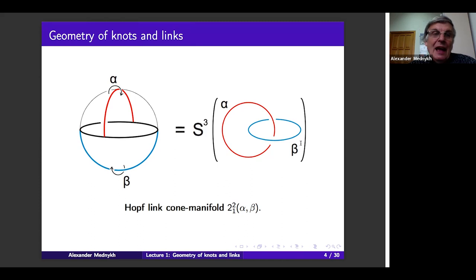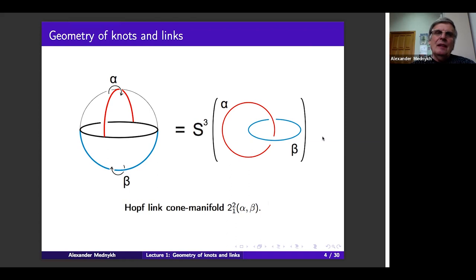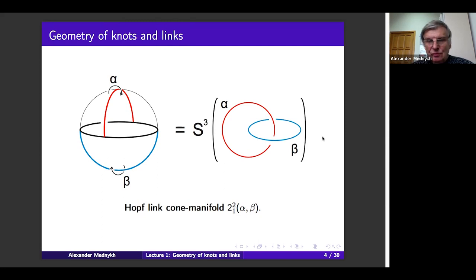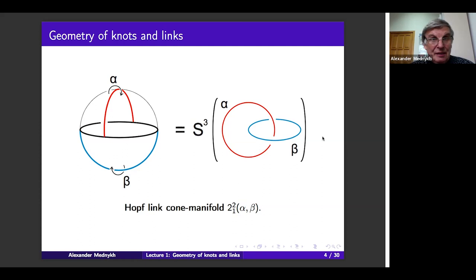After identification, looking at the topology, we recognize that our polyhedron has become just the three-dimensional sphere. As a result, we have the so-called Hopf link cone manifold with cone angles α and β. I should say that this construction is possible for arbitrary positive α and β — they may even be sufficiently large. Now I want to switch to the following subject: how to calculate the volume of the obtained cone manifold. All of this construction can be done in spherical geometry.